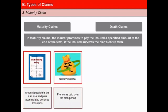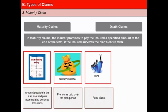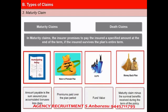In a return of premium plan, premiums paid over the term period are returned when the policy matures. Under a Unit Linked Insurance Plan (ULIP), the insurer pays the fund value as the maturity claim. Under a money-back plan, the insurer pays the maturity claim minus the survival benefits received during the term of the policy. The insurance contract terminates after the claim is paid.